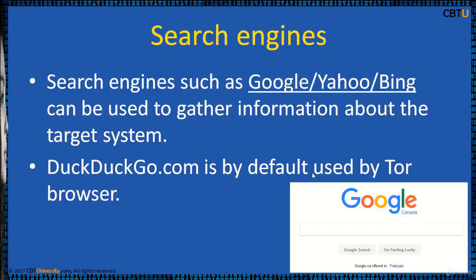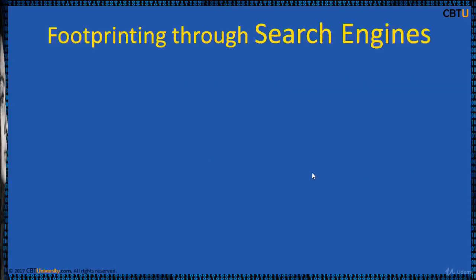A lot — and almost everything — can be found here with the right querying. Search engines such as Google, Yahoo, and Bing are used to gather information about a target system or enterprise. It depends on how well one knows how to use search engines to collect information. If used properly, an attacker can gather lots of information about a company, its employees, exposed sensitive information, its capabilities, and its policies.